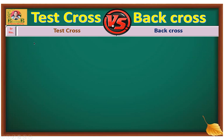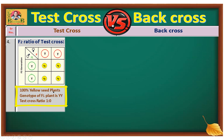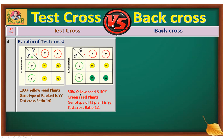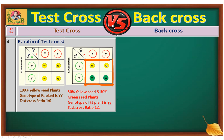Fourth point: the F2 ratio of these crosses. F2 ratio of test cross — as you can see in this Punnett square, F1 is crossed with the recessive parent. In F2 generation, 100% yellow colored seeds were obtained, which means the genotype of this unknown F1 plant is pure dominant. That's why the test ratio is 1:0. On the other hand, if in F2 generation 50% yellow seeds and 50% green seeds are obtained, this clearly means the genotype of the F1 plant is a hybrid. That's why the test ratio is 1:1 — two yellow colored seeds and two green colored seeds were produced.